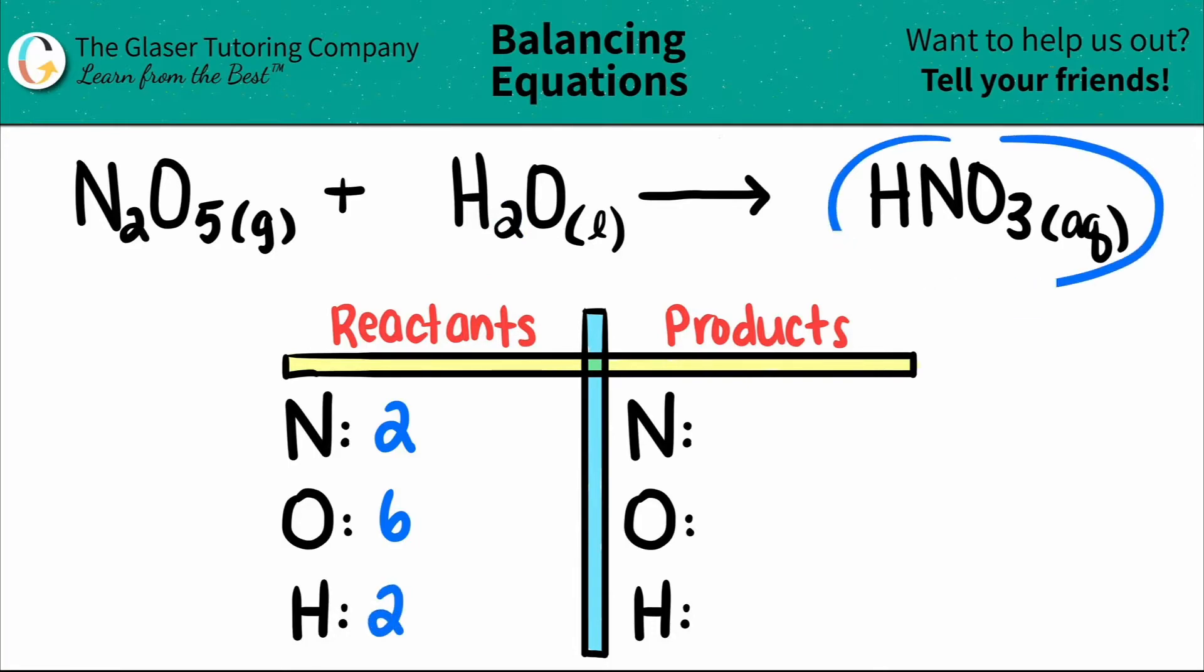On my product side, I have an H here. There's only 1, no subscript, so I have 1 hydrogen. The same thing goes with the nitrogen, I just have 1, no subscript. And then I have 3 oxygens, so I put a 3 here.